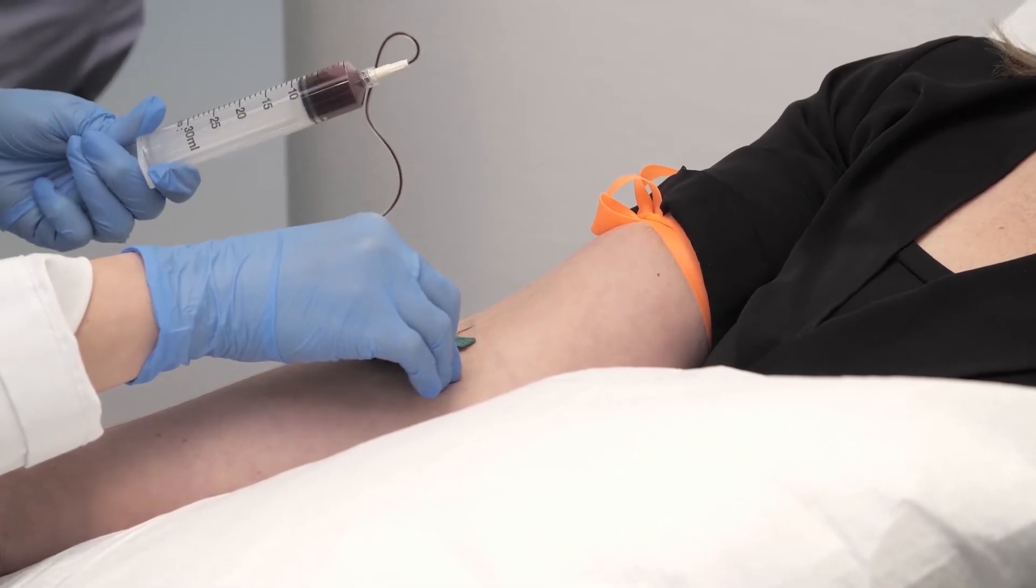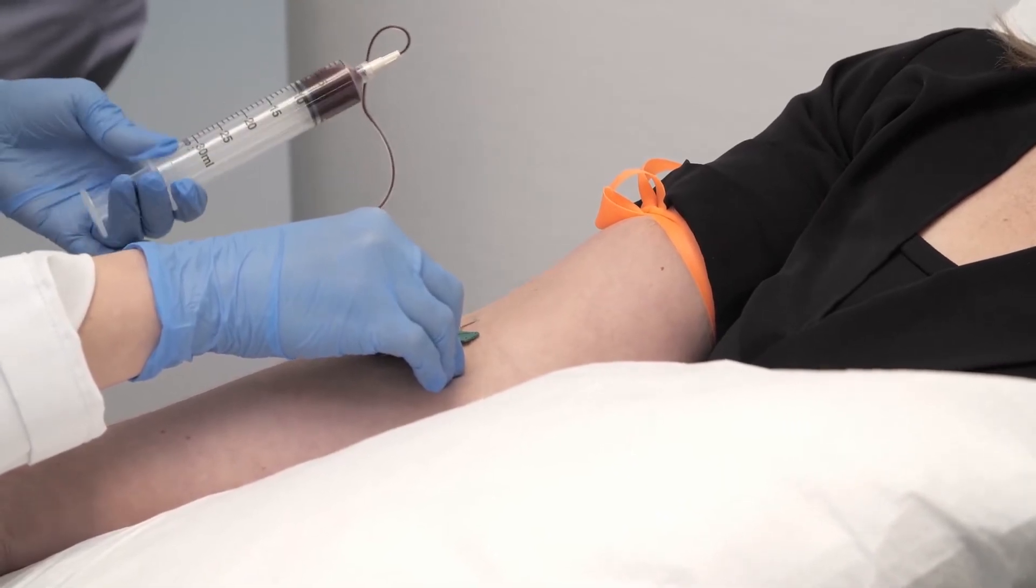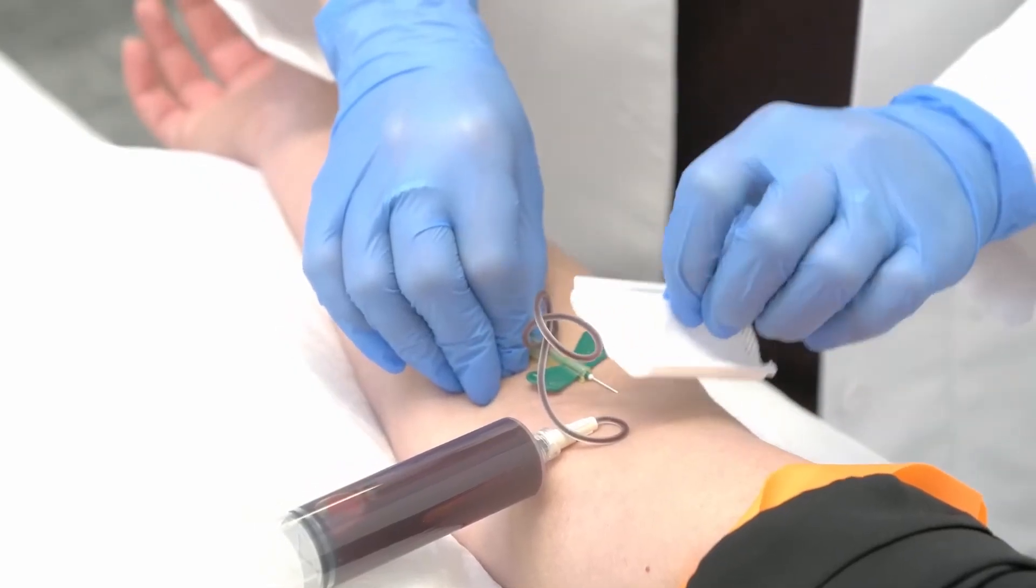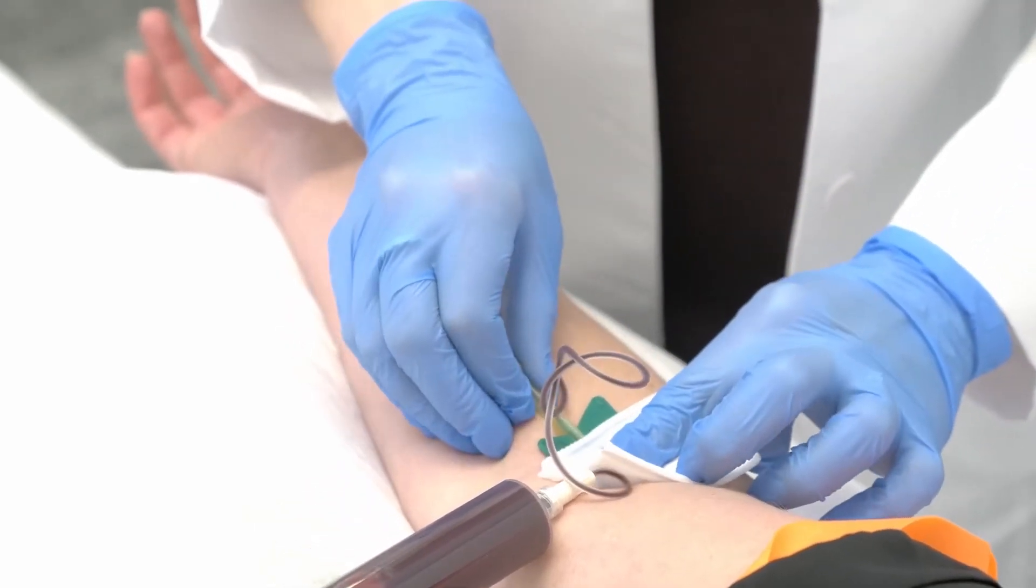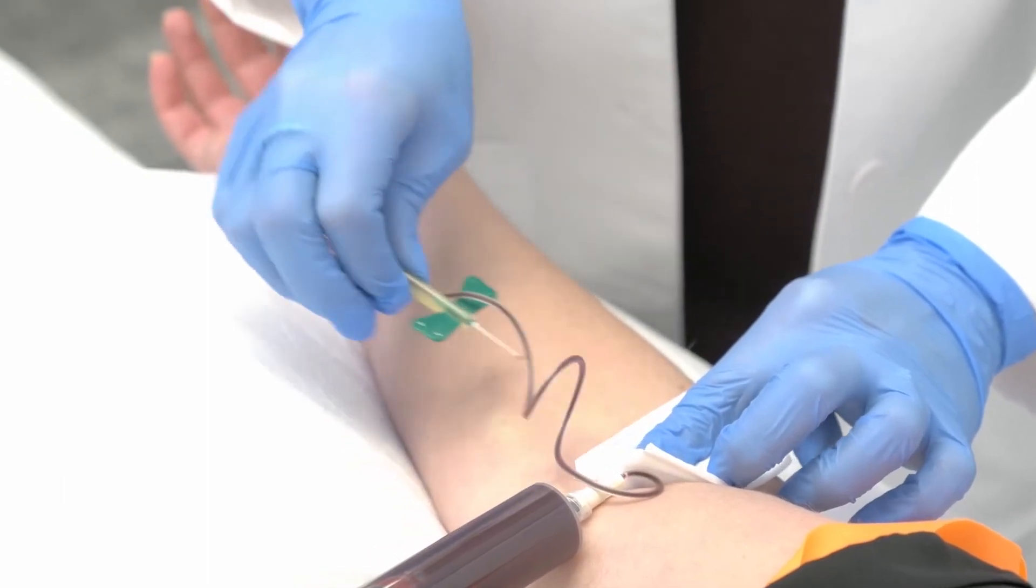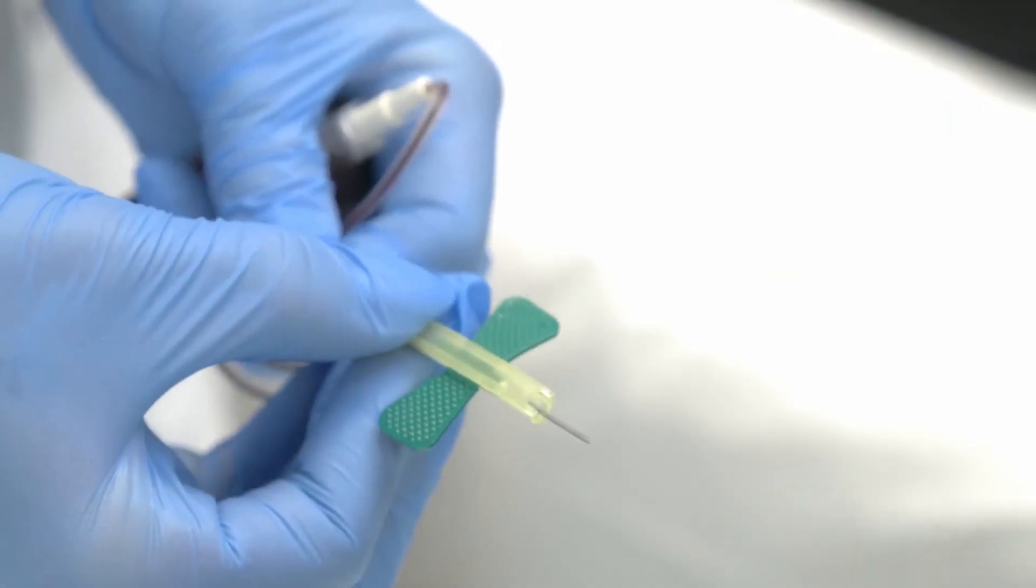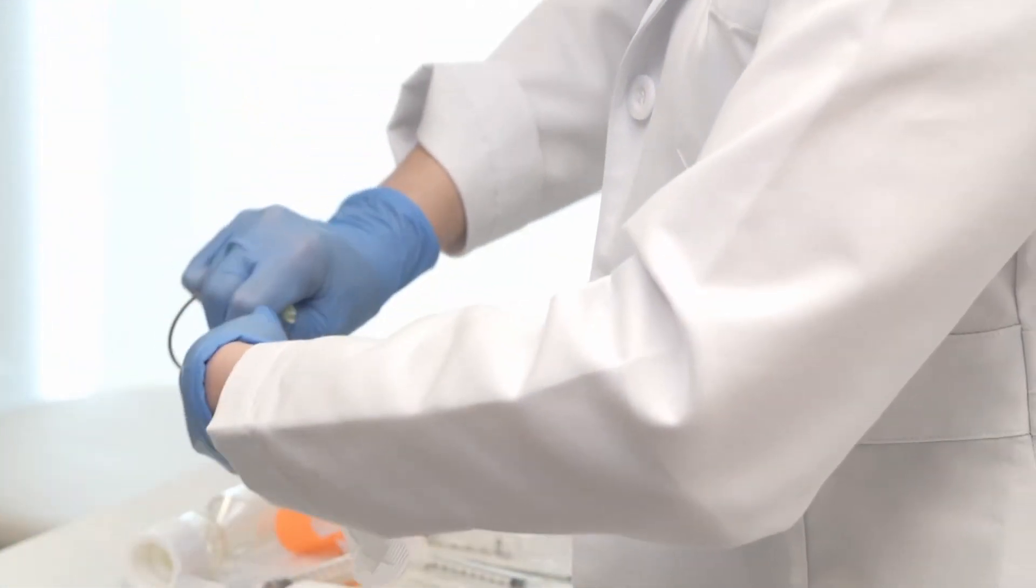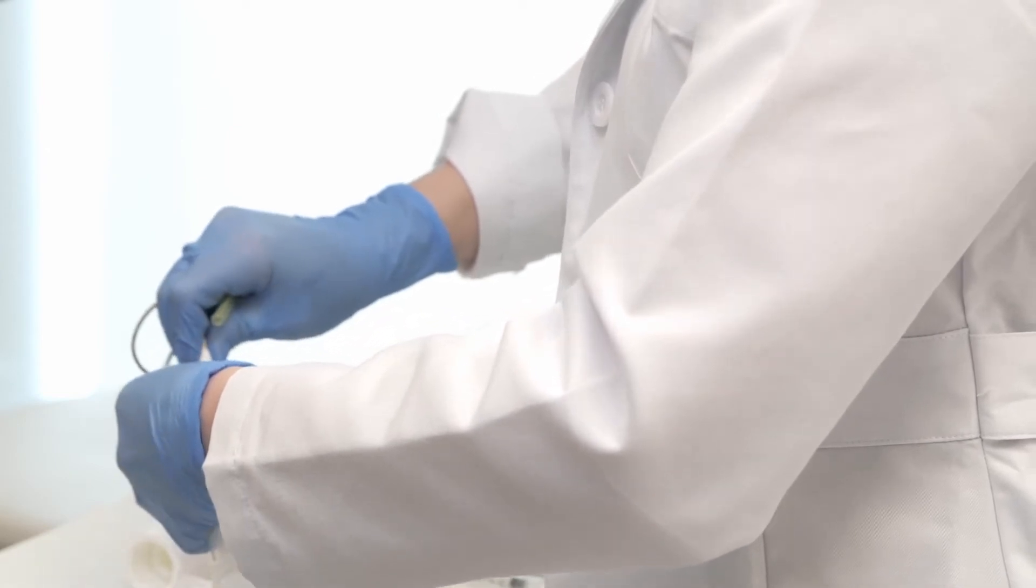Slowly draw 23 ml of blood into the 30 ml syringe that has the 2 ml of sodium citrate. Remove the butterfly and apply a band-aid or cotton with micropore tape to the puncture. Slide the protective yellow cover to shield the needle for safe disposal. Remove the butterfly from the 30 ml syringe and discard all biological matter as per regulation.